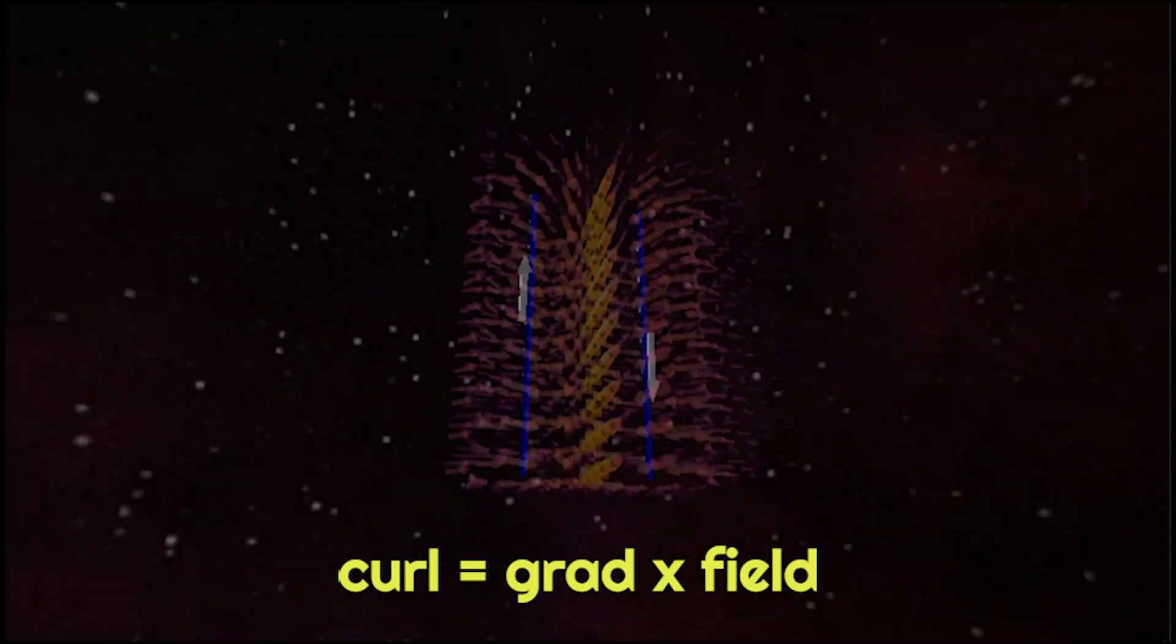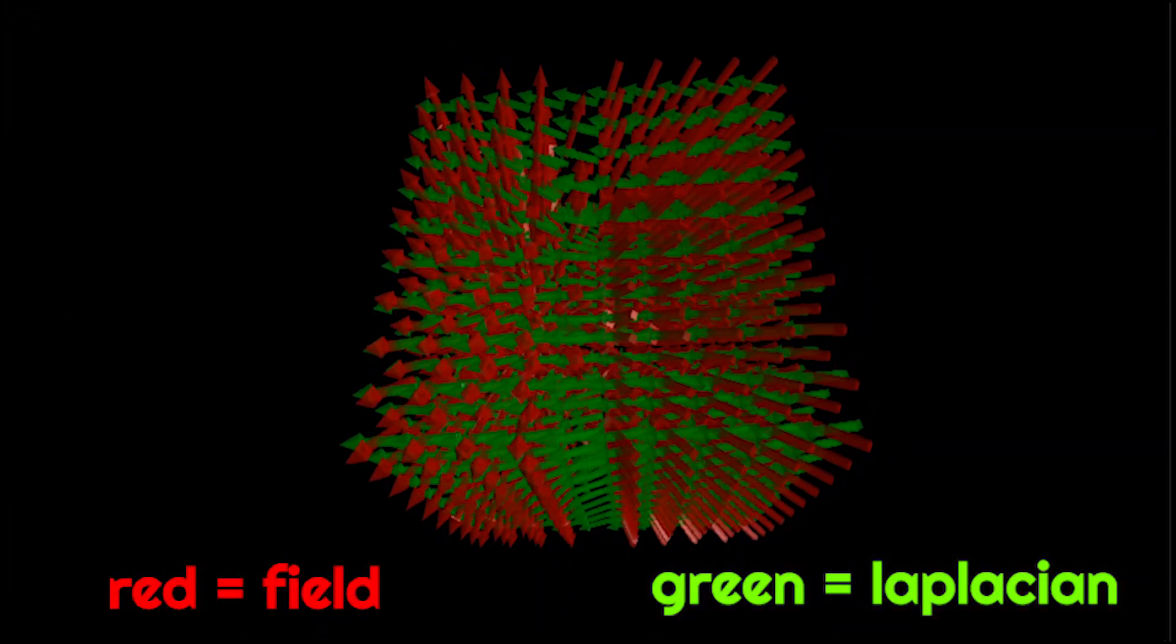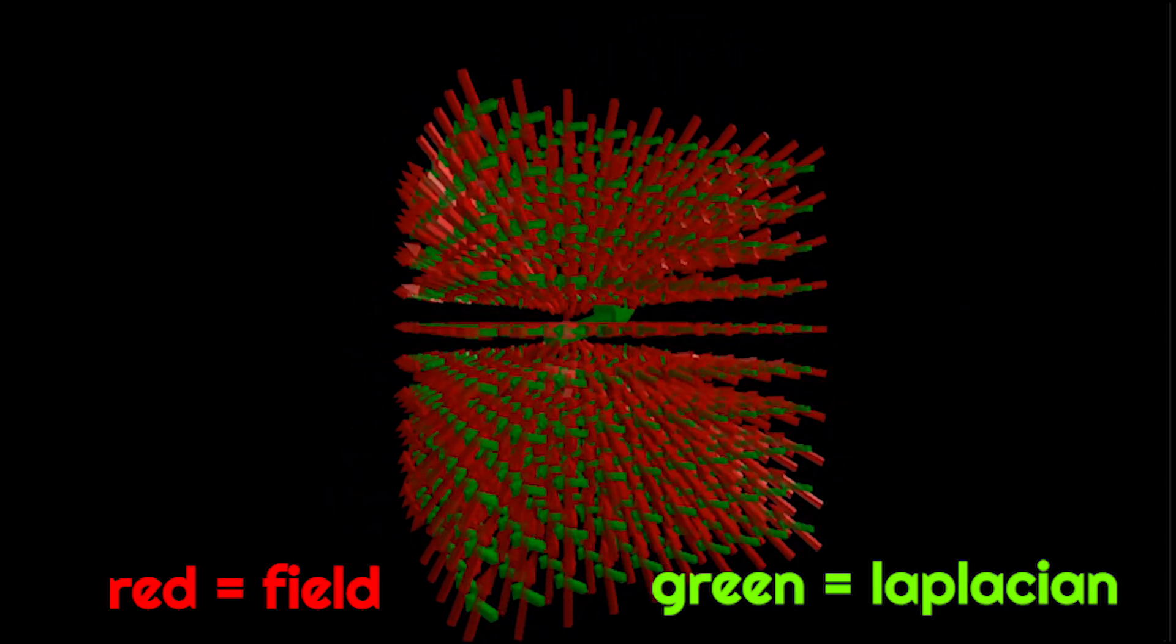Finally we can also take the Laplacian of a vector field which tells you the curvature of the field. All three of these types of derivative divergence curl and Laplacian show up in different physics applications.